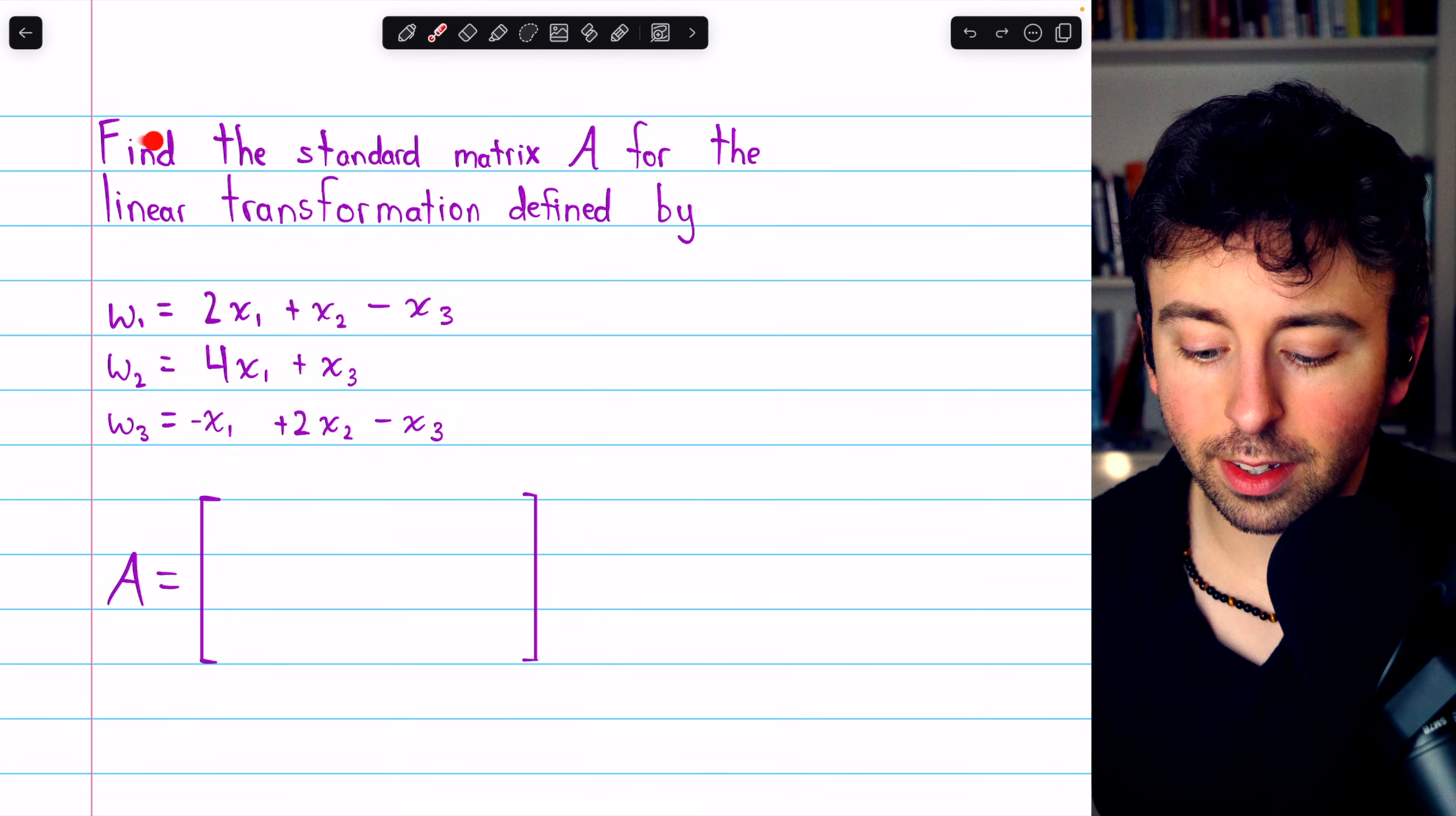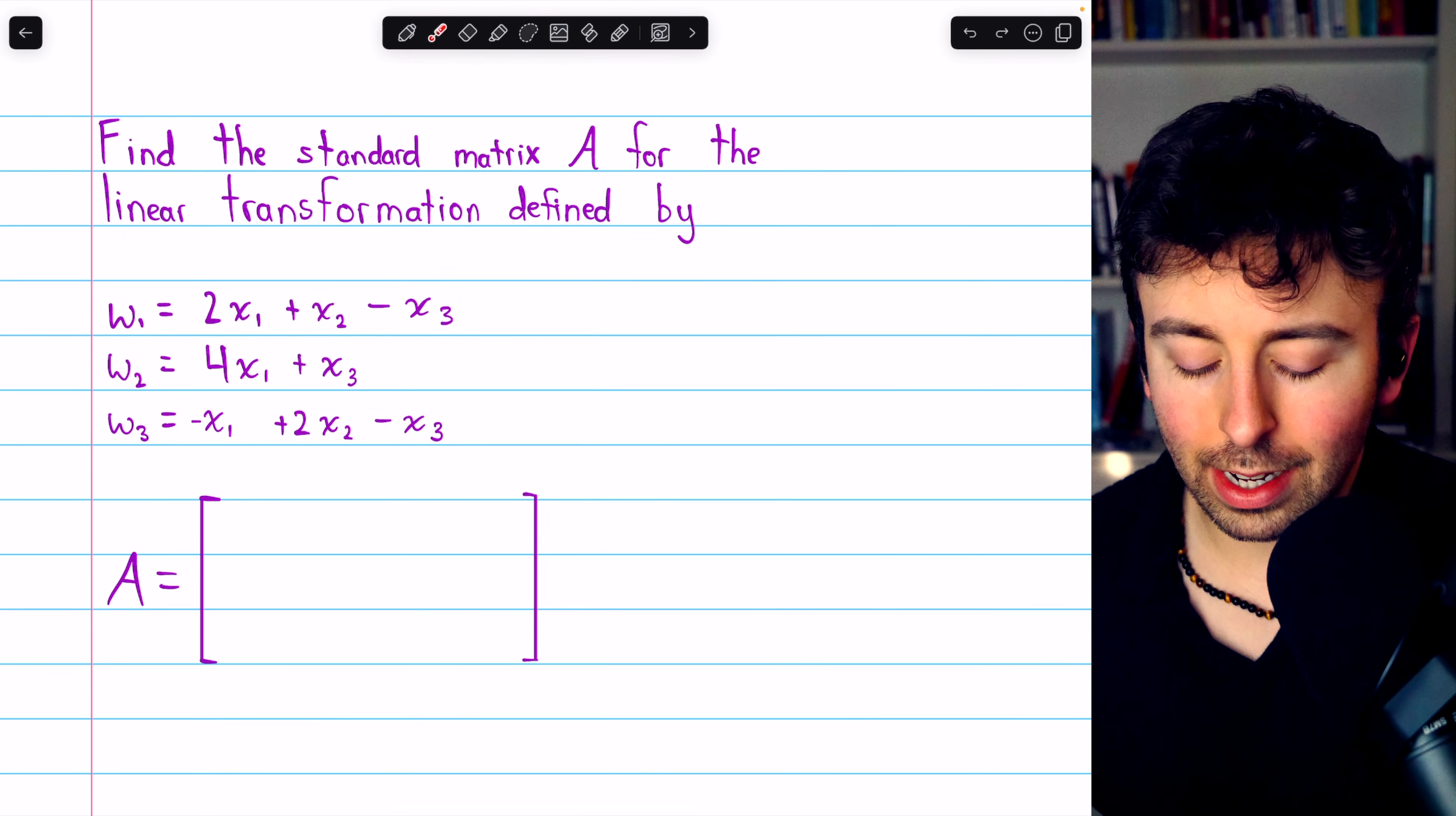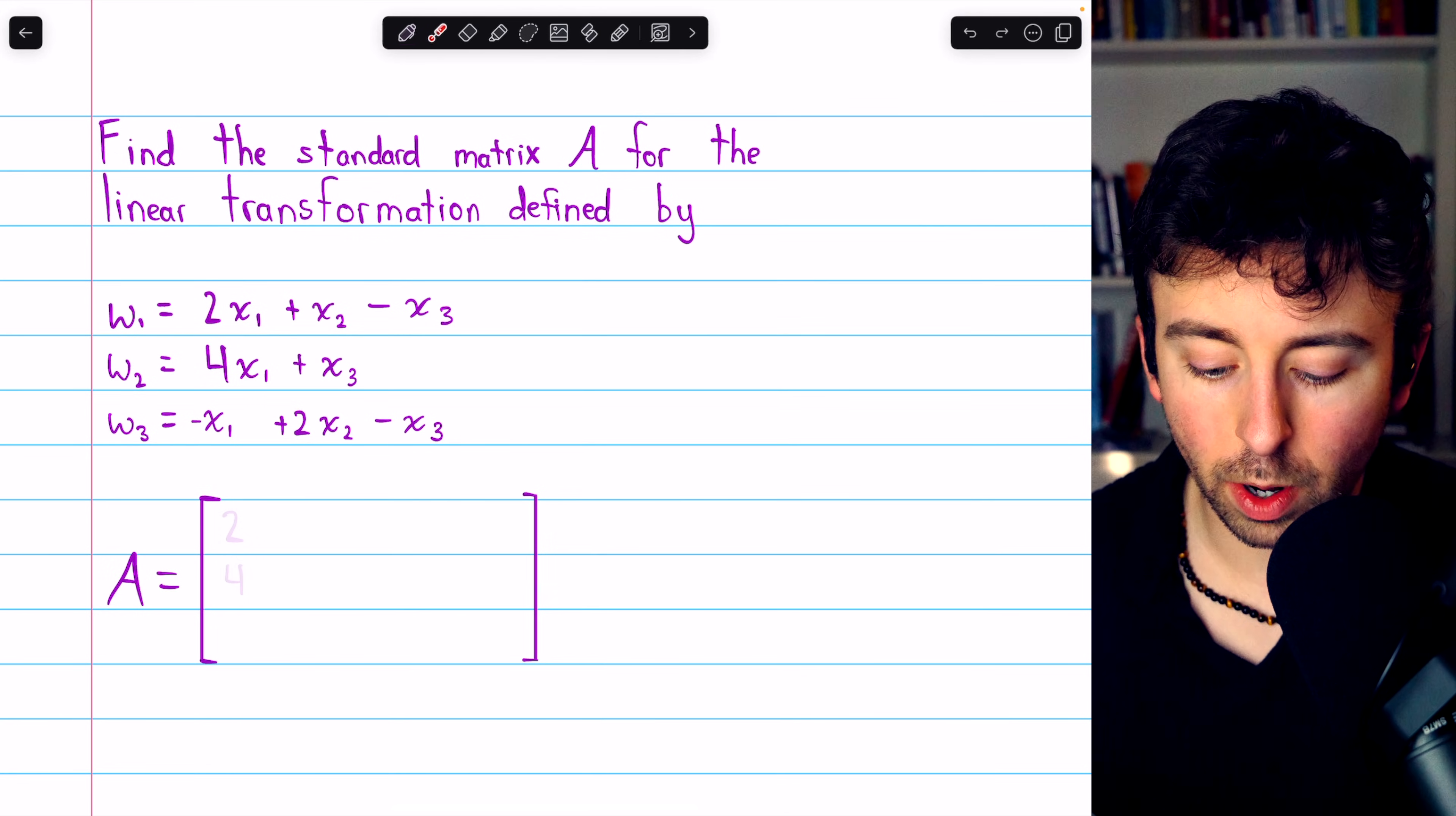We are asked to find the standard matrix A for the linear transformation defined by these equations. This takes a vector from R^3 and outputs a vector also in R^3. For our first column, we must consider the coefficients of x1: 2, 4, negative 1.